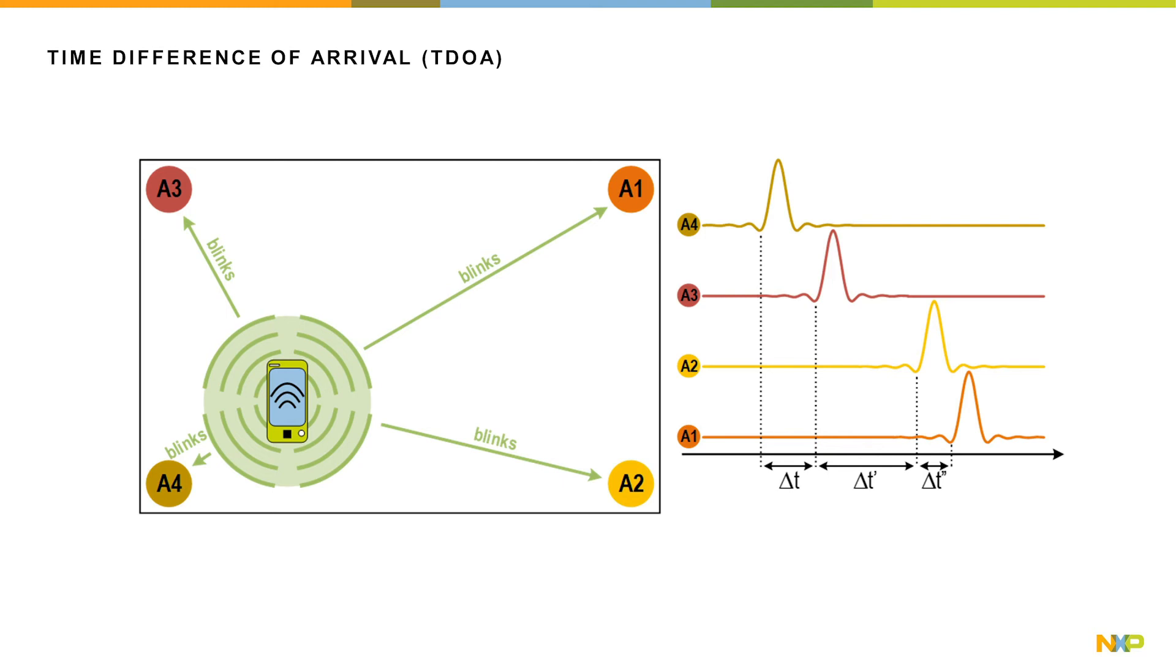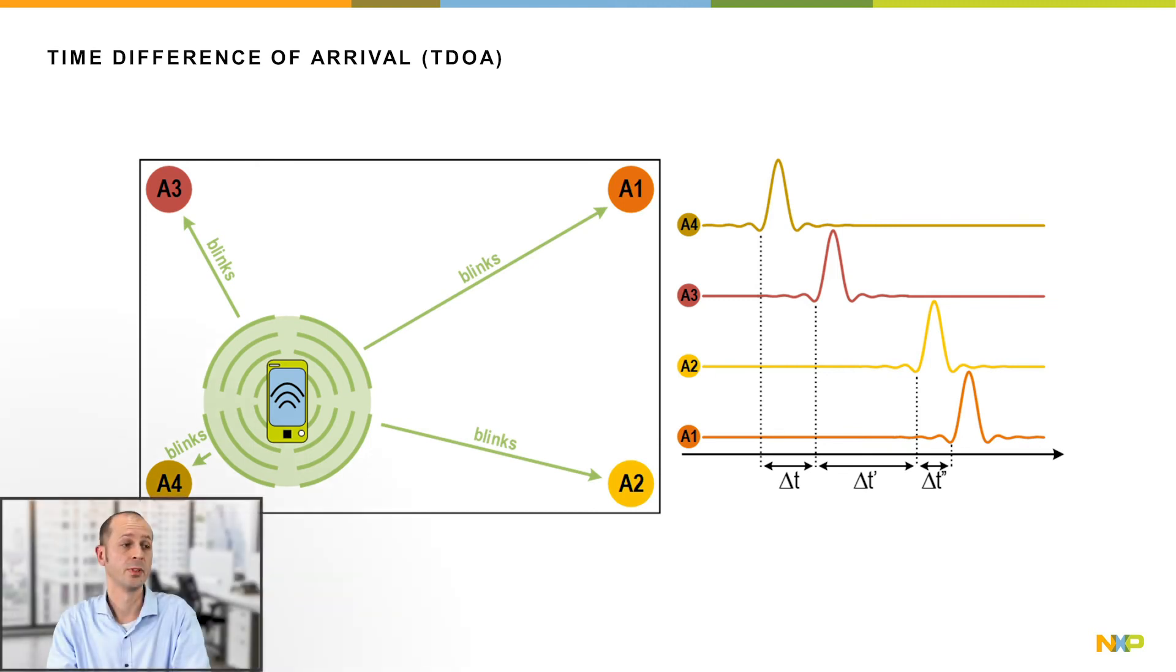Four anchors are needed for localization without ambiguities. All anchors must be synchronized. This induces additional system complexity and hardware cost increase compared to two-way ranging.